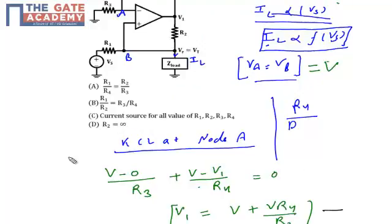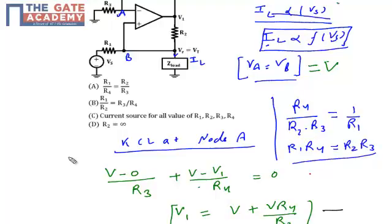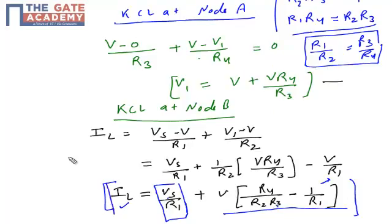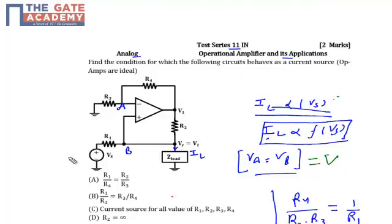So R4 upon R2 into R3 should be equal to 1 by R1. My condition will be if my R1 R4 is equal to R2 R3, or I can rewrite it as R1 by R2 is equal to R3 by R4. Under this condition I will have a direct relation between output current and input voltage. My IL will be equal to Vs by R1. So my condition will be R1 by R2 must be equal to R3 by R4, which is equation B.